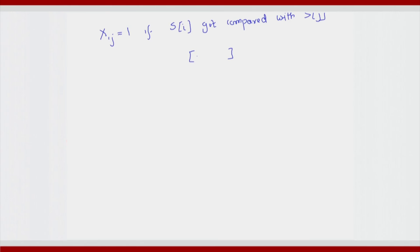So what am I talking about? A subarray i to j where i and j get compared. The probability that i and j get compared is actually proportional to the length of this subarray. That means i and j get compared if either i was chosen as a pivot or if j was chosen as a pivot. It is not necessary for i and j to be compared at all if something in between got chosen as a pivot.